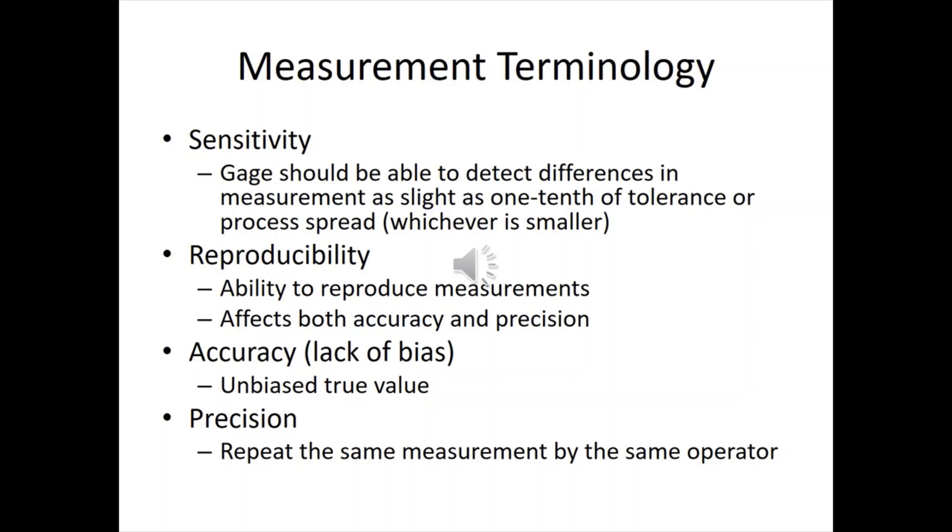Reproducibility, the ability to reproduce the measurement. So we take something and measure it. You want to get the same results over and over again, both by the same operator and hopefully by another operator. This affects both accuracy and precision.